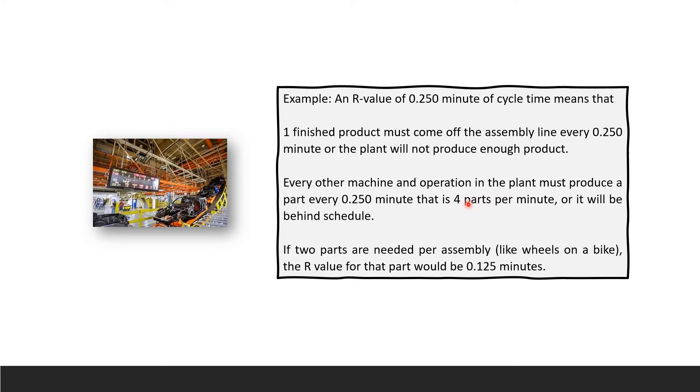Every machine and operation in the plant must produce a part every 0.250 minute. That's four parts per minute. 0.250 is for one part, so in one minute we produce four parts. If two parts are needed per assembly, like wheels on a bike, the R-value for that part will be 0.125 minutes.